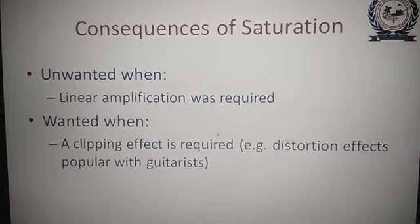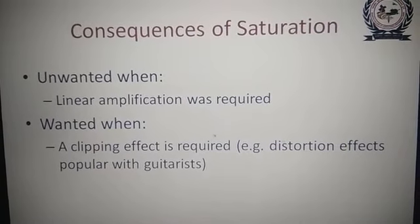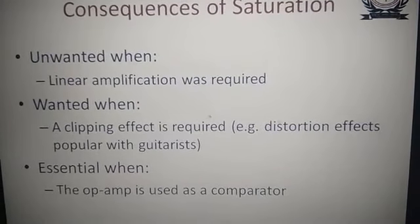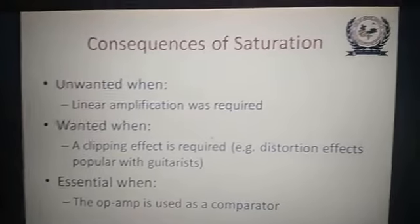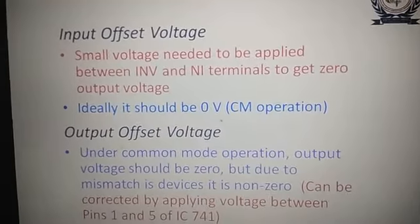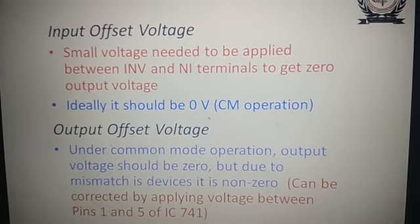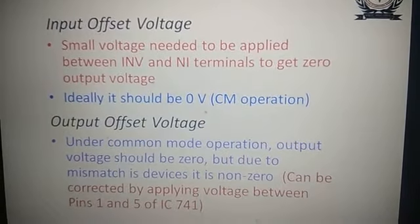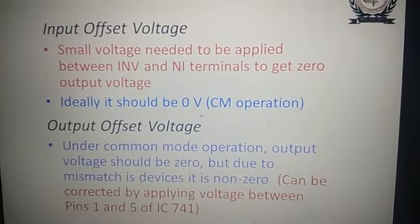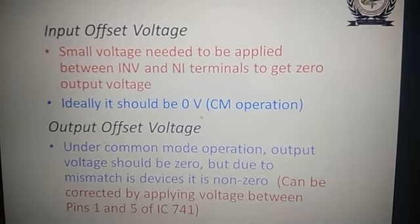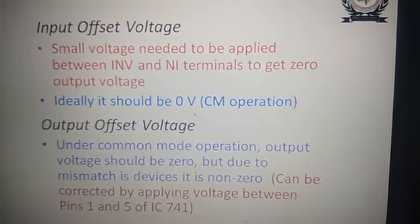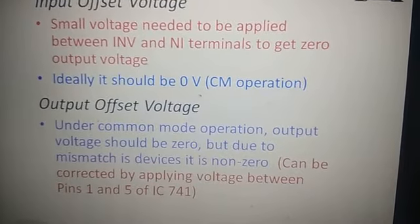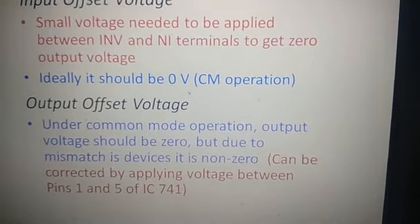We need to avoid saturation where linear amplification is required, but it is sometimes required for clipping circuits to remove distortions, and it is essential when the op-amp is used as a comparator. The input offset voltage is the small voltage needed to be applied between inverting and non-inverting terminals to get zero output voltage. Ideally it should be zero, but practically it is in the range of microvolts. Under common mode operation, the output voltage should be zero, but due to mismatch of devices it is non-zero.